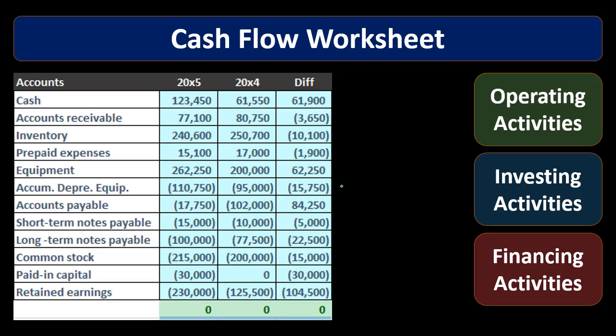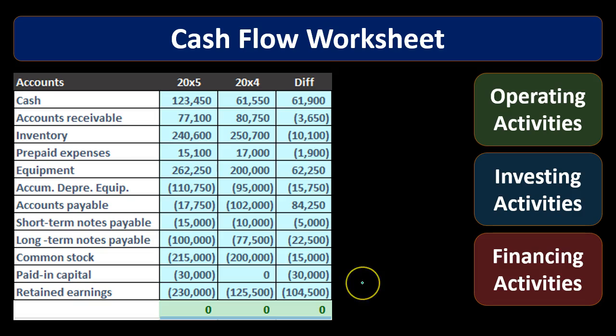So the tools we'll need are: a balance sheet for two time periods — the prior period and the current period — from which we create a worksheet like this. An income statement to give us more detail about changes in the numbers. And then additional information — in a book problem they'll just give it to us, but in real life we go through the changes, check the GL, and look at additional information needed to verify the numbers as we get used to doing these cash flow statements.